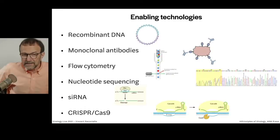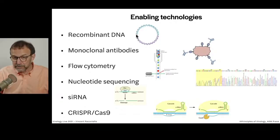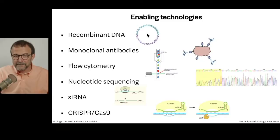These enabling technologies include recombinant DNA — taking a DNA sequence and putting it in a plasmid, which is a molecule that can reproduce in bacteria apart from the chromosome. Recombinant DNA technology allows you to cut and splice DNAs together. If you have an RNA genome, you make a DNA copy using reverse transcriptase. Recombinant DNA allows you to clone the genes encoding receptors.